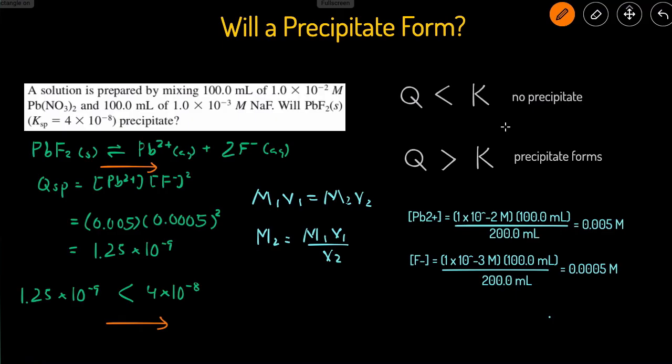And that's how you determine if a precipitate will form or not. Start by calculating the Qsp, then compare it to the Ksp. If Q is less than K, no precipitate forms, and if Q is greater than K, then a precipitate will form.